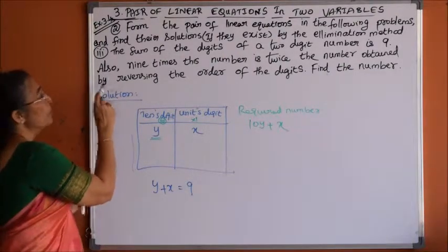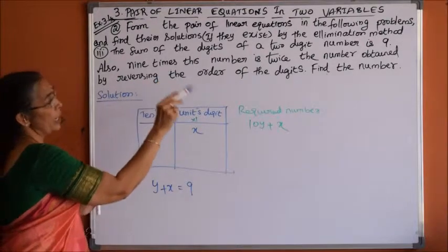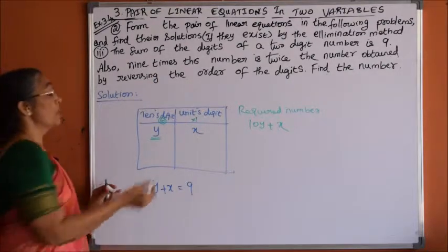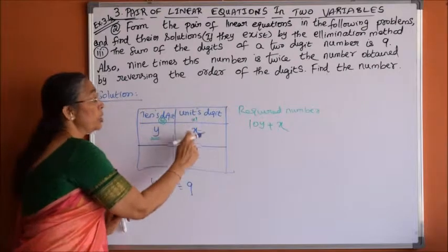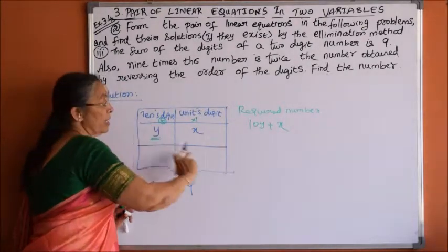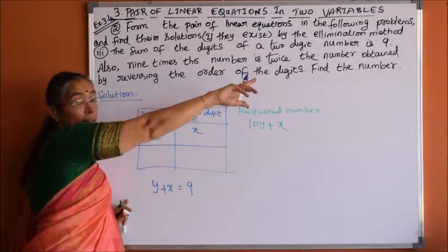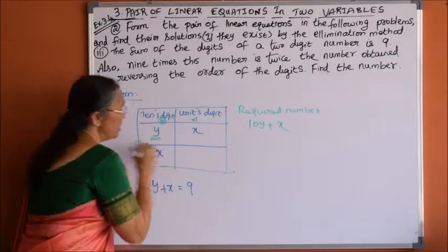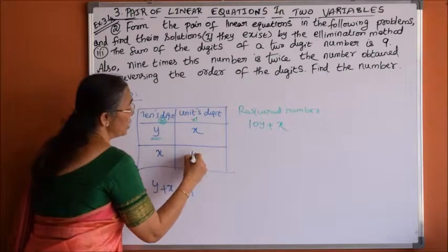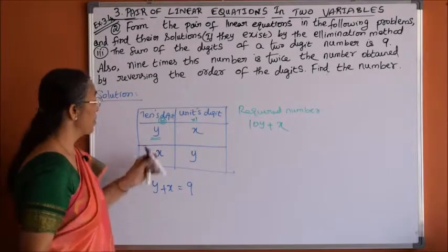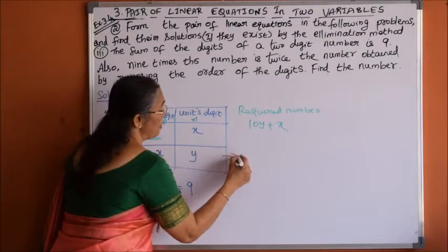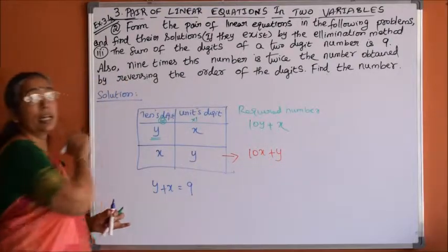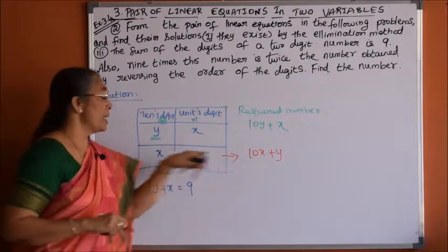Next condition: 9 times this number is twice the number obtained by reversing the order of the digits. Reversing the digits means the units digit becomes the tens digit and the tens digit becomes the units digit. For example, if 36 is reversed, it becomes 63. In the same way, after reversing, the tens digit is x and the units digit is y, so the reversed number is 10x plus y.